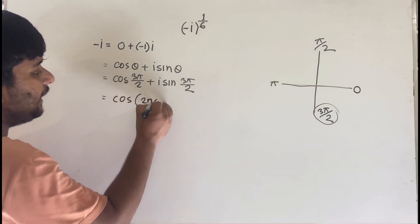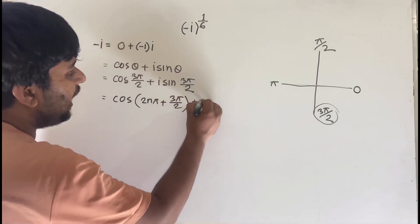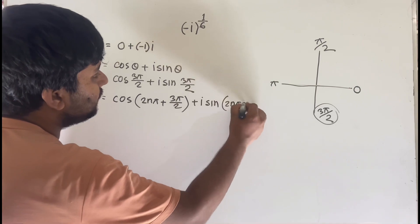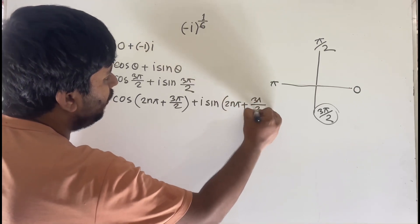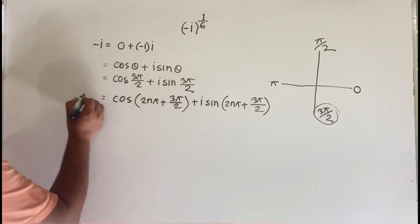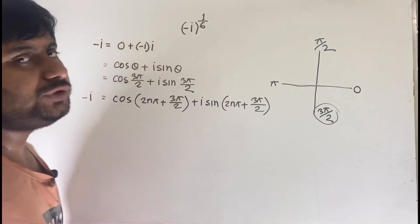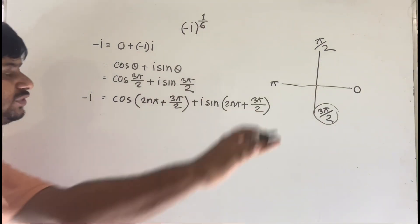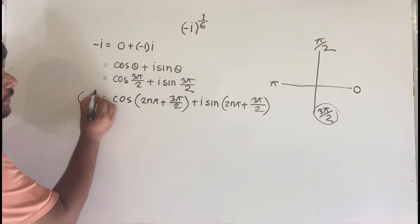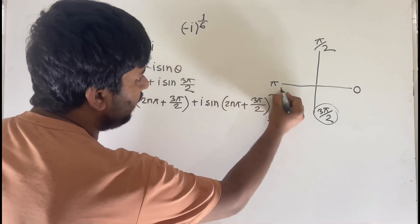So I can write minus i in the general form as cos(2nπ + 3π/2) + i·sin(2nπ + 3π/2). Then our question is minus i, whole to the power 1 over 6, so I apply the power 1 over 6 to both sides.